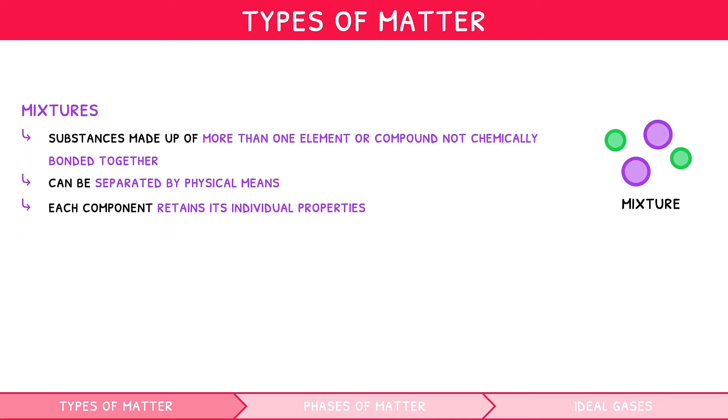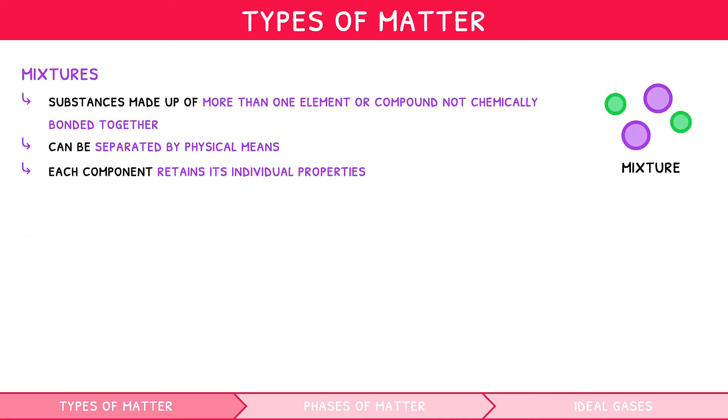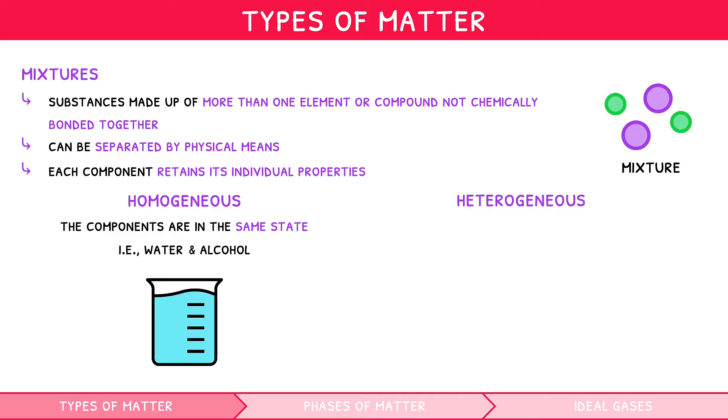There are generally two different types of mixtures you need to be aware of. Homogeneous mixtures are those in which the components are of the same state of matter, i.e. two liquids mixed together, say water and alcohol. Heterogeneous mixtures are those in which the components are in different states of matter, say a solid and a liquid, i.e. sand and water.